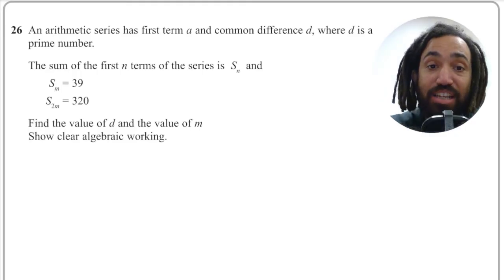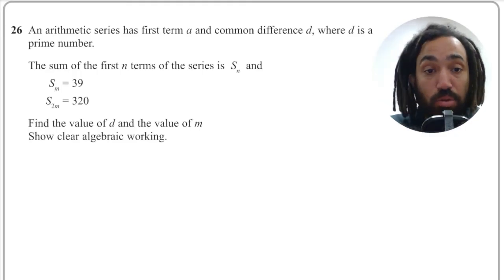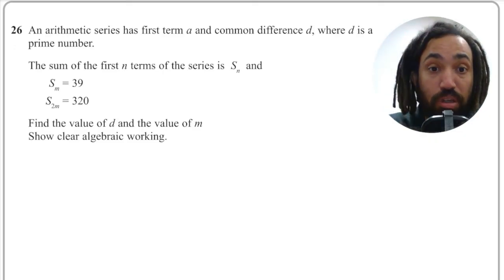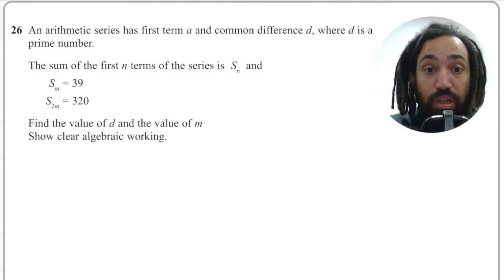The sum of the first N terms of the series is Sn and Sm equals 39 and S2m equals 320. Find the value of D and the value of M, show clear algebraic working. Let's get into it.